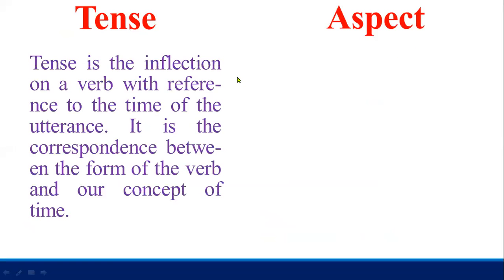If we give a definition — what is tense? Tense is an inflection on a verb; it is reference to the time of the utterance. It is a correspondence between the form of the verb and our concept of time. You can say the time and the action together can be found as a tense.